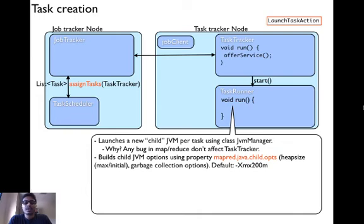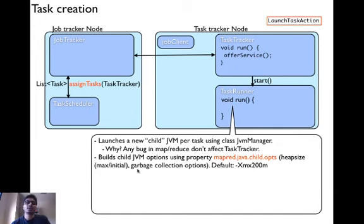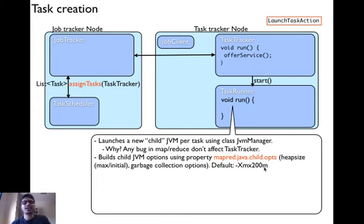Since a new JVM is being created, JVM options are configurable. A user can specify options using the property MapRed.java.child.opts. The usual options include specifying heap size or garbage collection options. You can specify the maximum heap size using the string xmx with a value in megabytes — for example, xmx200m sets a maximum heap size of 200 MB. For data processing, you would typically set this to 1 GB.